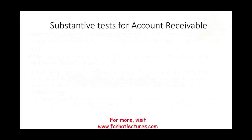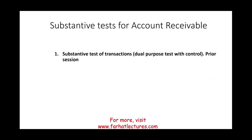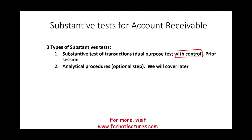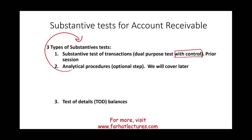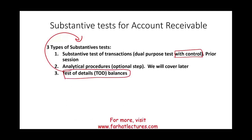Let's talk about substantive testing for account receivable. There are three tests: substantive testing of transactions, which we looked at in the prior session when we looked at test of controls — this is a dual purpose test. We could also do analytical procedures, which is an optional step in substantive testing, but it's a cost-effective way to take a look at the numbers. The third method is test of detailed balances, which we'll talk about more in this session.